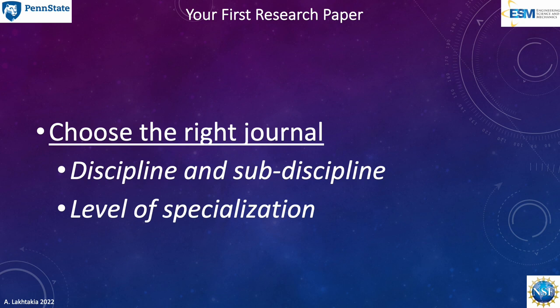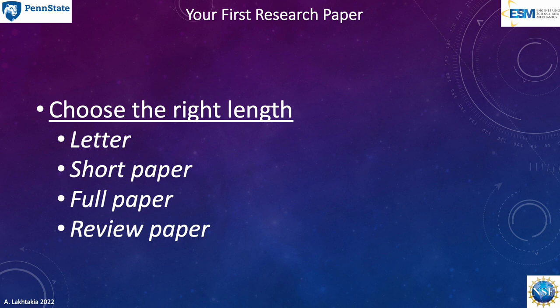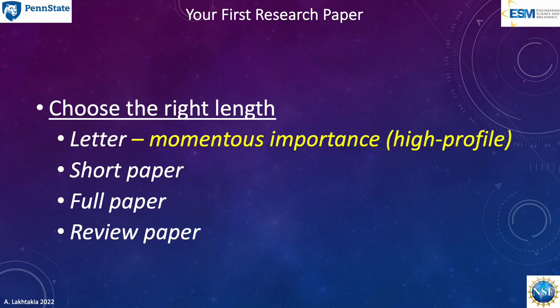You may even choose a general science magazine if you think your readership is very broad. Then, read the editorial board's instructions to authors for that journal. Next, you have to choose the length of the paper. Short papers are sometimes called letters, sometimes short papers. Regular length papers are called full papers, and then there are also review papers.